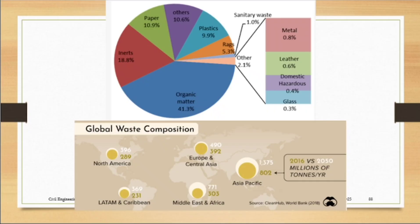Agricultural waste is another category. Looking at a pie chart of solid waste composition, the blue color represents organic matter at 41.3%. There is also paper and organic matter, then cloths — and clothes from the house are organic matter. From different sources worldwide, the types of waste collected show that organic matter constitutes 41% of the total. Then there are inerts, paper waste, and others.